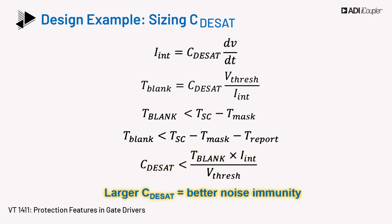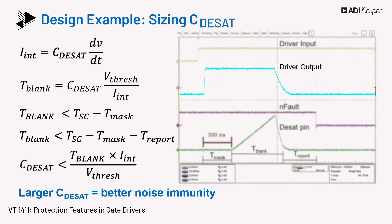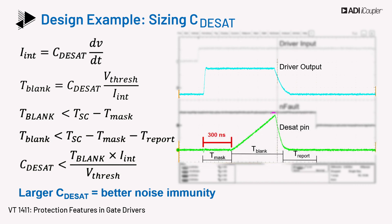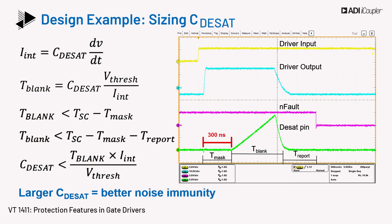Choosing a higher value of C-desat improves noise immunity, and thus a larger capacitor can be chosen while adding an external pull-up resistor to increase the capacitor charging current and still remain within spec for the blanking time. The figure on the right shows the gate driver output being pulled low as the driver enters a soft shutdown mechanism when the desat pin voltage exceeds the threshold. Other signals such as the fault signal and the driver input are also labeled.